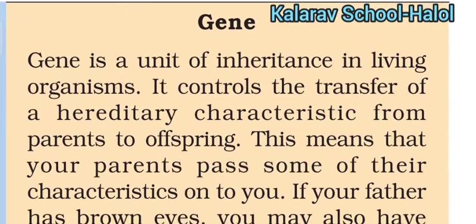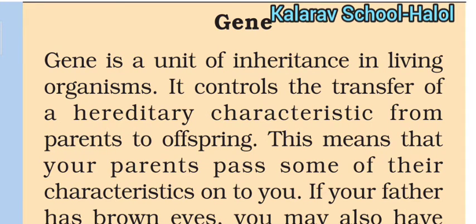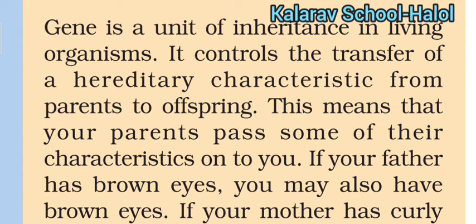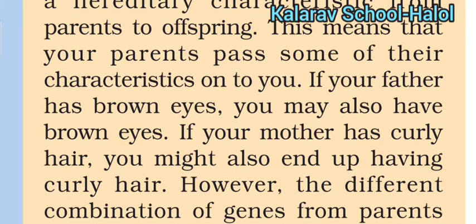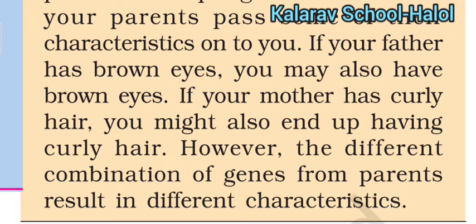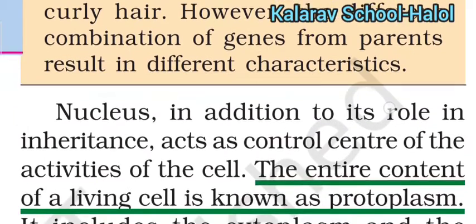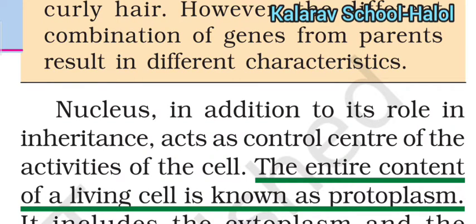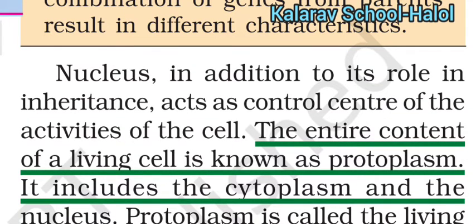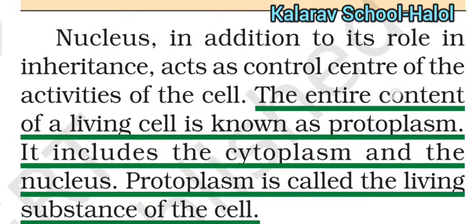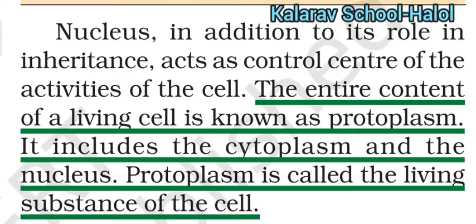A gene is a unit of inheritance in living organisms. It controls the transfer of hereditary characters from parents to offspring. For example, if your father has brown eyes, you may also have brown eyes; if your mother has curly hair, you might also have curly hair. Different combinations of genes from parents result in different characters. The nucleus mainly plays a role in inheritance and acts as the control center of the activities of the cell. The entire content of a living cell is known as protoplasm, which includes cytoplasm and nucleus — it is called the living substance of the cell.